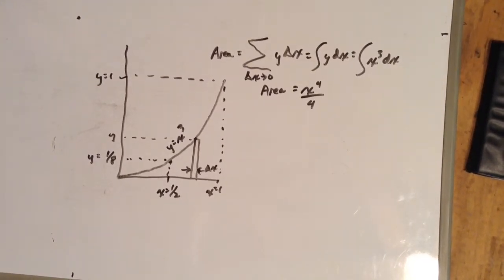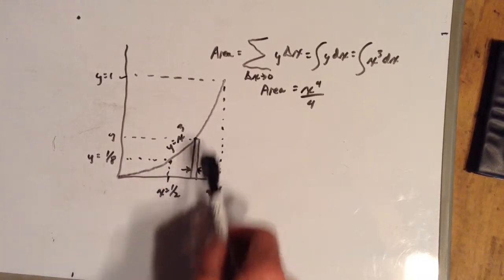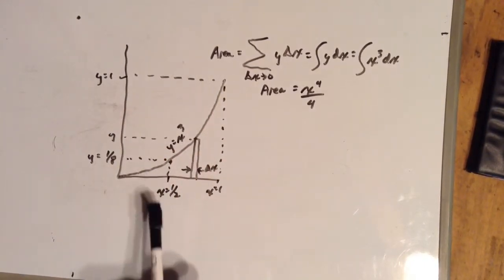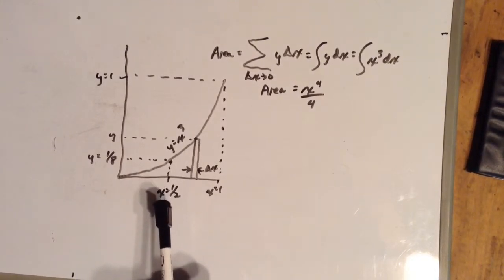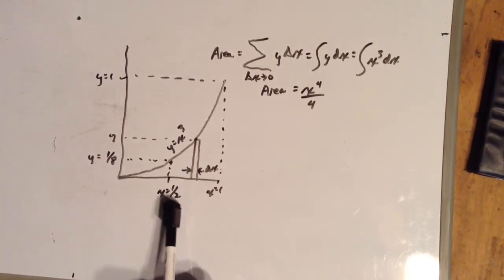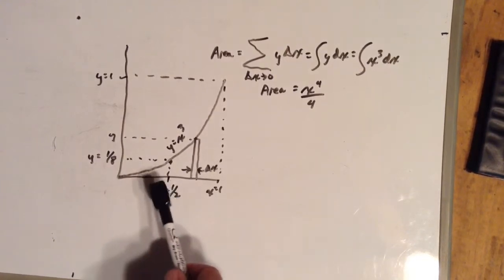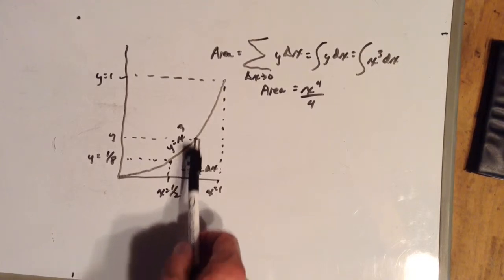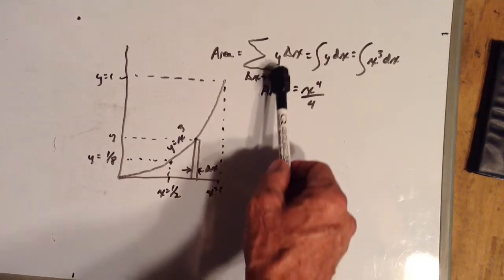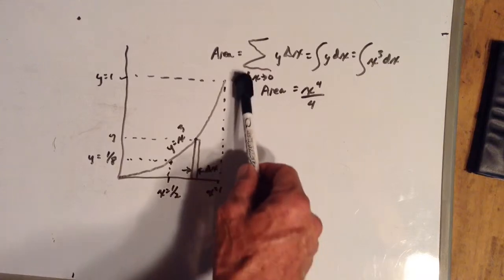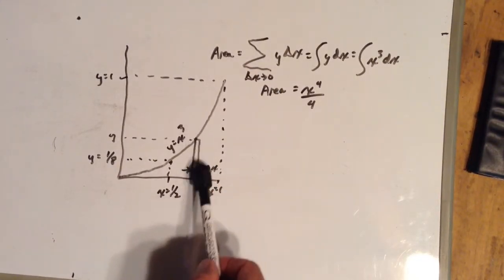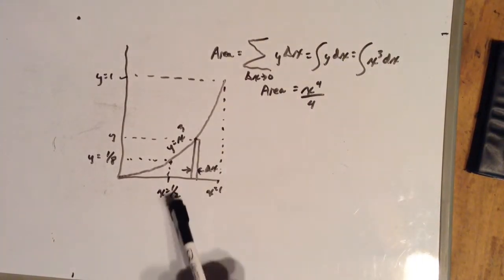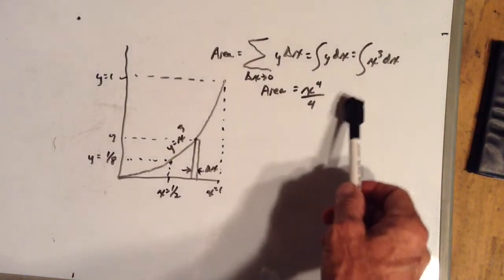Here is the y equals x cubed curve. Notice these curves keep getting lower and lower. If x is 1, then y is 1. But if x is 1 half, y is not 1 fourth like it was with the y equals x squared curve — y is 1 eighth, because 1 half times 1 half times 1 half is 1 eighth. Let's look at the area underneath this curve. Here's our representative rectangle of area — it's y high and delta x wide. We have the sum of all these little y delta x's as delta x approaches 0, giving us an infinite number of incremental rectangles, which equals the integral of y dx.